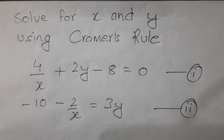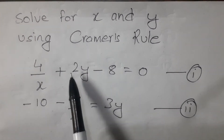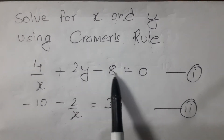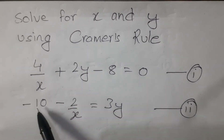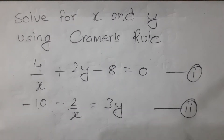This is the given equation: 4 by x plus 2 by y minus 8 equals 0. The similar equation is: 2 minus 10 minus 2 by x equals 3y.